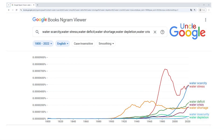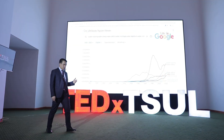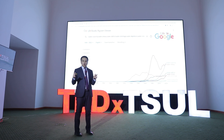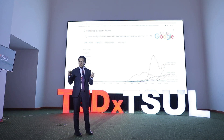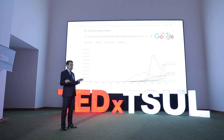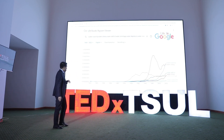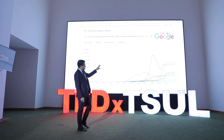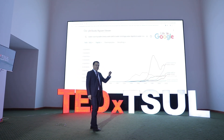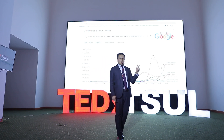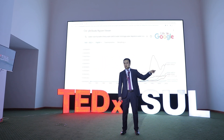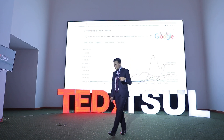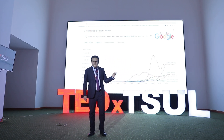We will use the Ngram Viewer just to explore when and how many times words related to water shortage or any other buzzwords appear in digitalized text. We can see that words like water scarcity, water stress, water deficit, water crisis, water shortage, water insecurity, and water depletion all appeared primarily after 1900 — two centuries after Benjamin Franklin's words and one century before ours. That makes Benjamin Franklin a time traveler of his time.